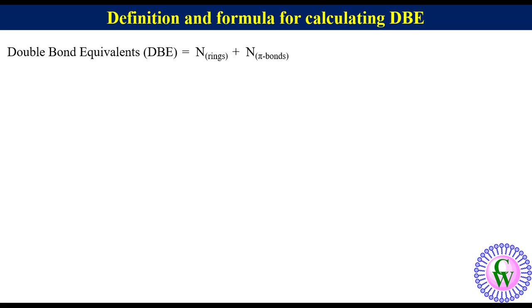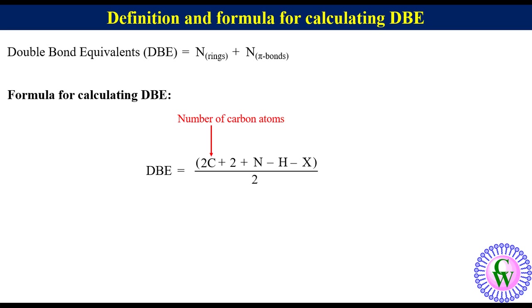If only molecular formula is given, then DBE can be calculated by the following formula. DBE is equal to 2C plus 2 plus N minus H minus X upon 2, where C is the number of carbon atoms, N number of nitrogen atoms, H number of hydrogen atoms, and X number of halogen atoms.